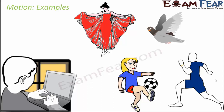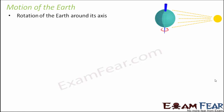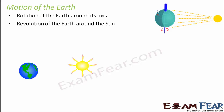When a lady is dancing, her hands, legs, and fingers are all moving — changing position with time — so different parts of her body are in motion. Think of examples in nature: the rotation of the Earth about its own axis is also motion because with time, each point of the Earth changes its position.